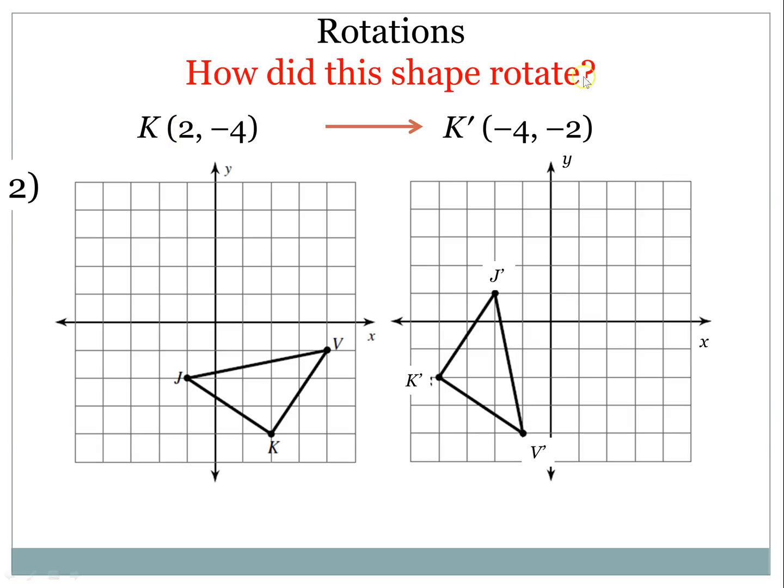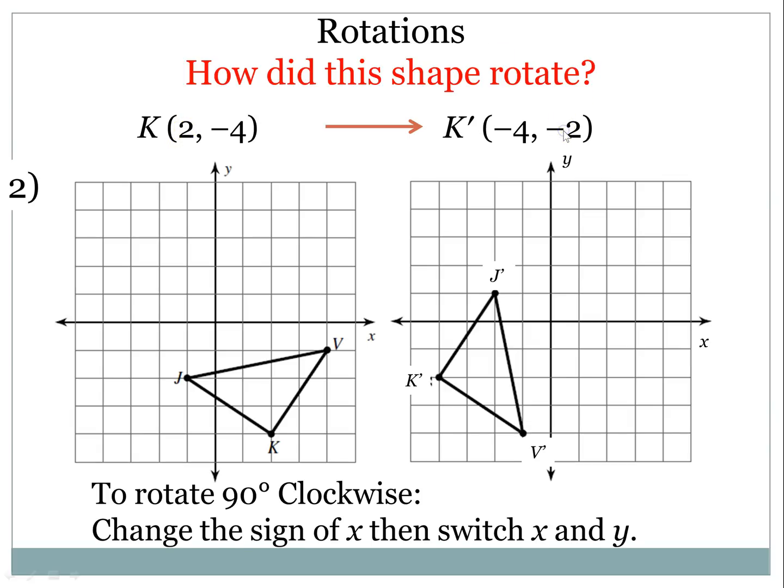Okay, so 2 is positive, and it became negative, and then they switched places. And that's how you rotate 90 degrees clockwise, you change the sign of x, and then switch x and y.